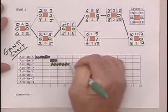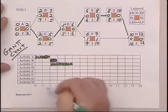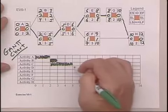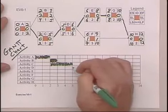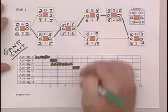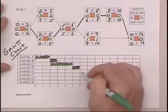Then D can start as soon as B and C is completed, which is the fifth day, and it takes one day. Then we can start both E and F. E takes two, F takes three.